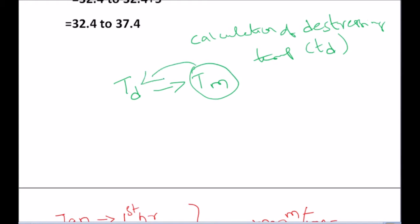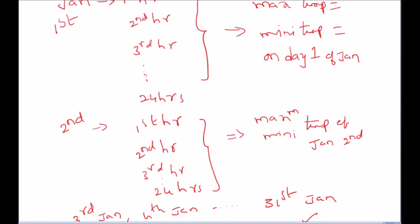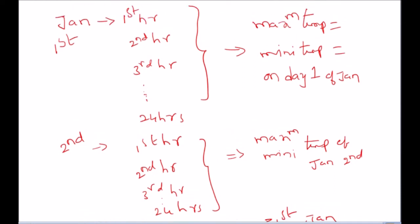To understand how to calculate mean temperature, let me take one small example. Let us take the year 2021 — January, February, March, and so on up to December. For January, on the first day, we record the temperature of the rail every hour — first hour, second hour, third hour, up to 24 hours. Among these 24 hours, we record what is the maximum temperature and what is the minimum temperature on day one.